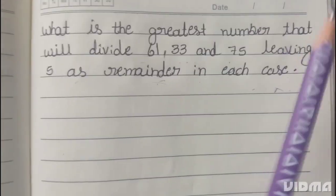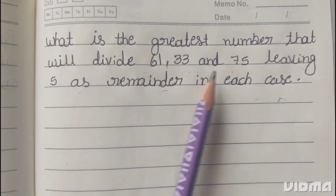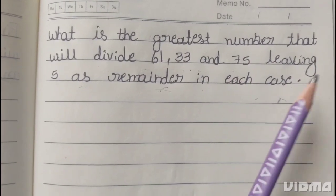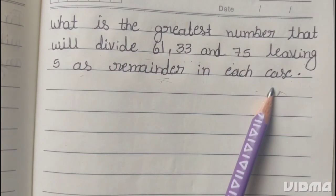What is the greatest number that will divide 61, 33 and 75, leaving 5 as remainder in each case?